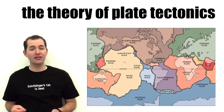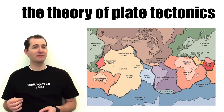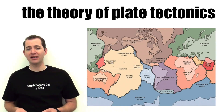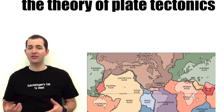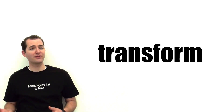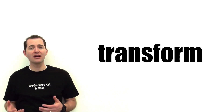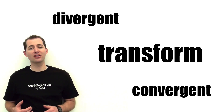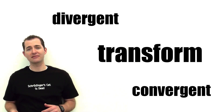Transform boundaries are one of the three main types of plate boundaries in the theory of plate tectonics. The three types of plate boundaries are transform boundaries, divergent boundaries, and convergent boundaries.